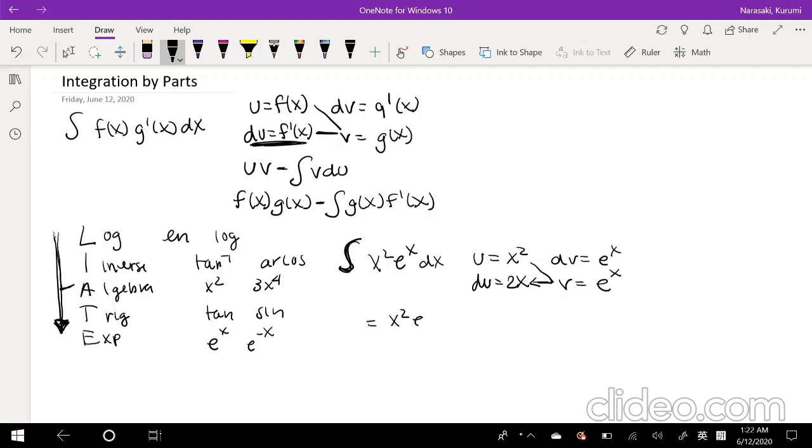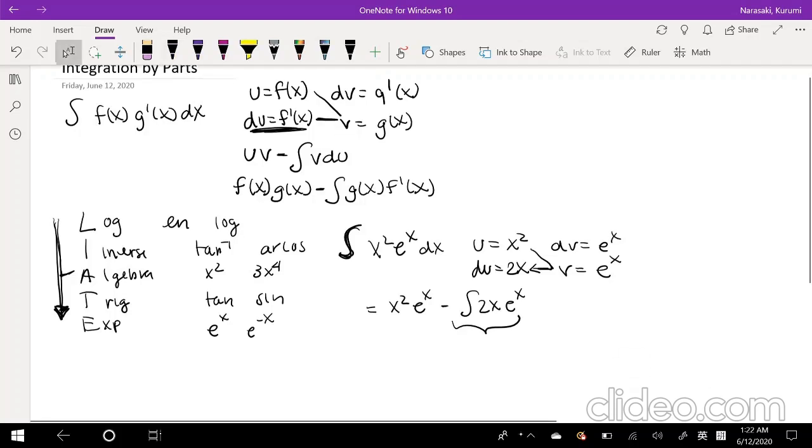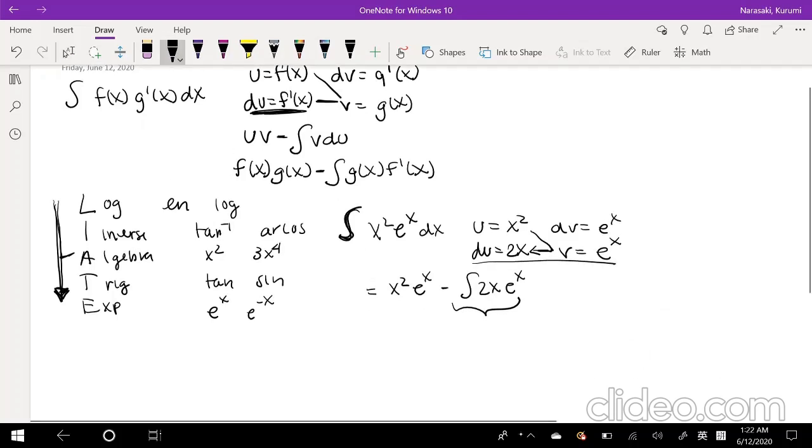So that's going to be x squared e to the x minus the integral of 2x e to the x. And then you have to take the integral of this, but you notice something. You're probably like, wait a minute, that's also two functions put together. Oh no. Yeah, sometimes that's going to happen. That means you just have to do it one more time.